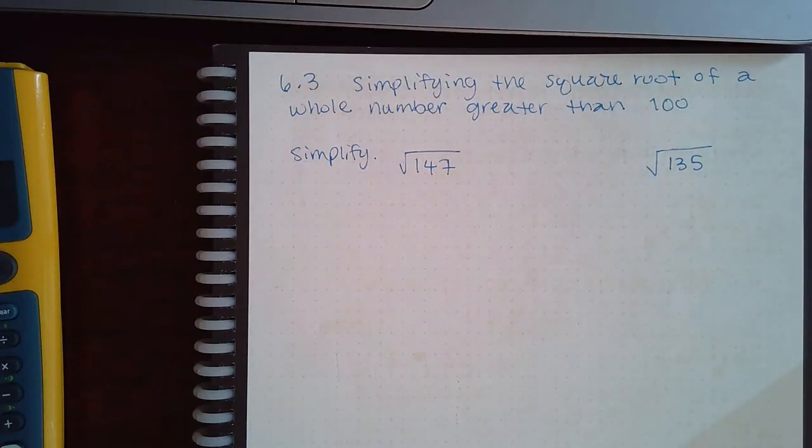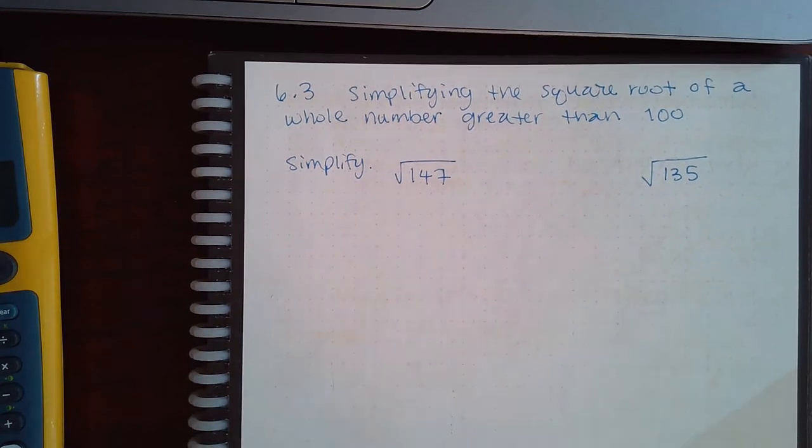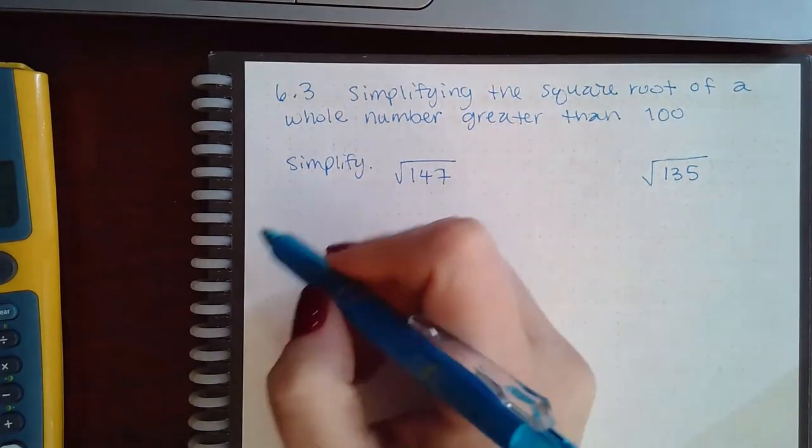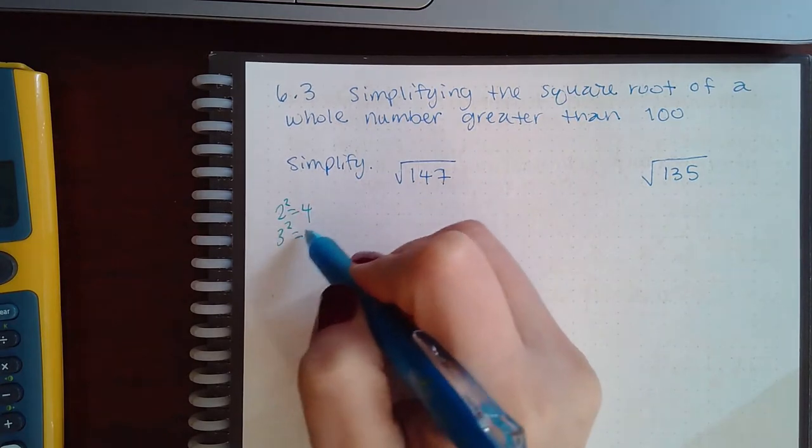Here we have simplifying the square root of a whole number greater than 100. So we're going to go through our perfect squares: 2 squared is 4, 3 squared is 9...